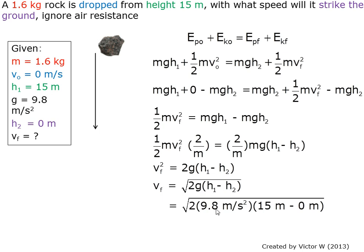Plugging in the numbers, we have the square root of 2 times 9.8 meters per second squared times 15 meters minus 0 meters, giving us a final velocity of 17 meters per second.